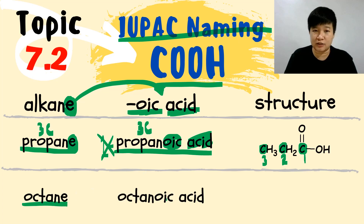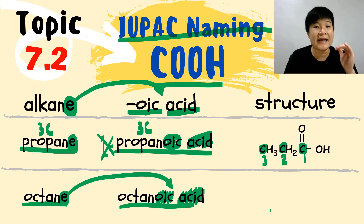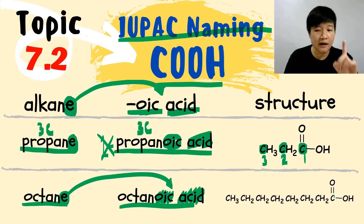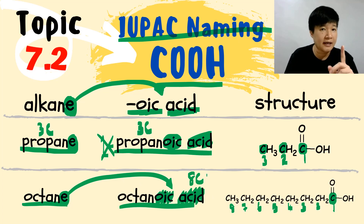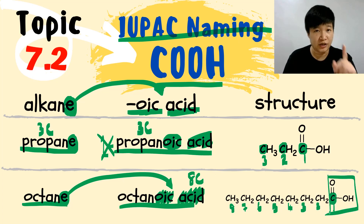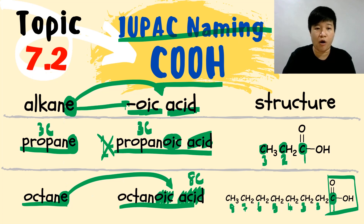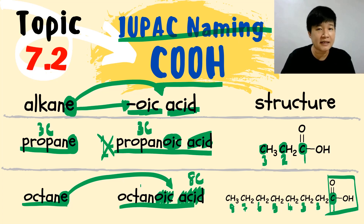Another example: octane changes to octanoic acid, simply changing the -e to -oic acid. Octanoic acid is an 8-carbon carboxylic acid, and the 8 carbons always include the carbon holding the double bond O and OH as number 1: 1, 2, 3, 4, 5, 6, 7, 8. That is how we write the parent name — from ethane to ethanoic acid, butane to butanoic acid, pentane to pentanoic acid. Very simple.